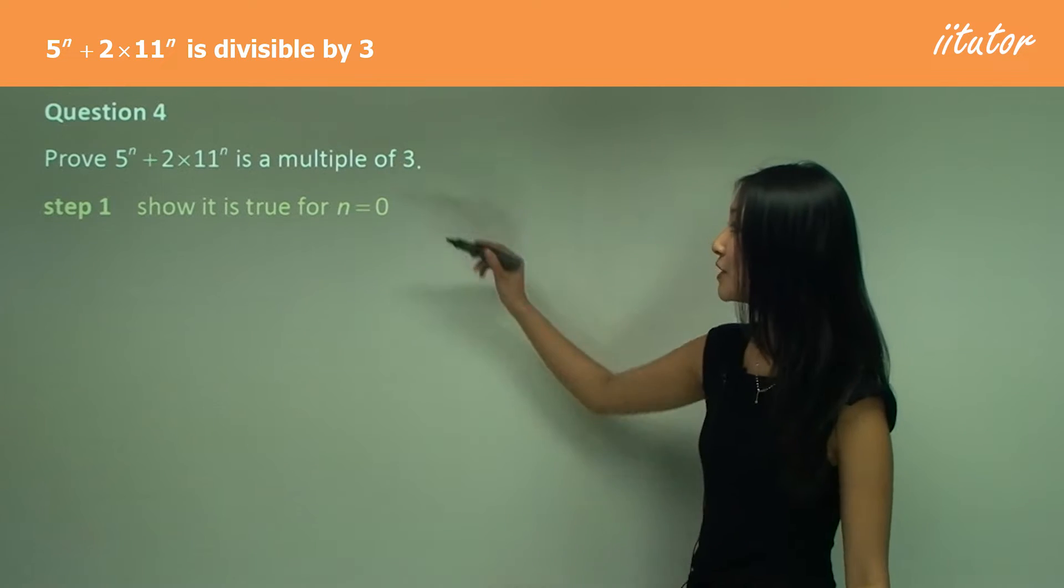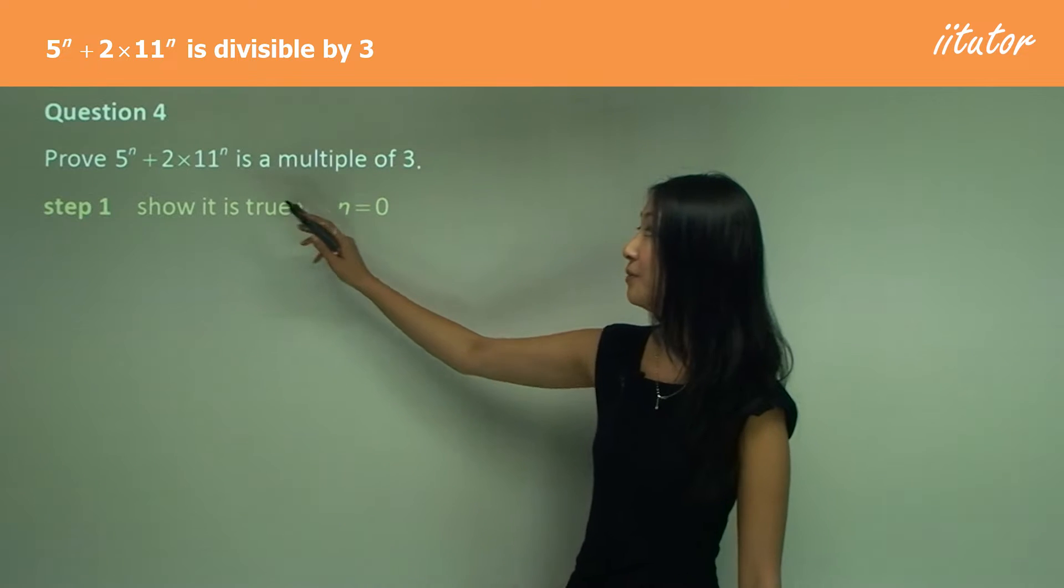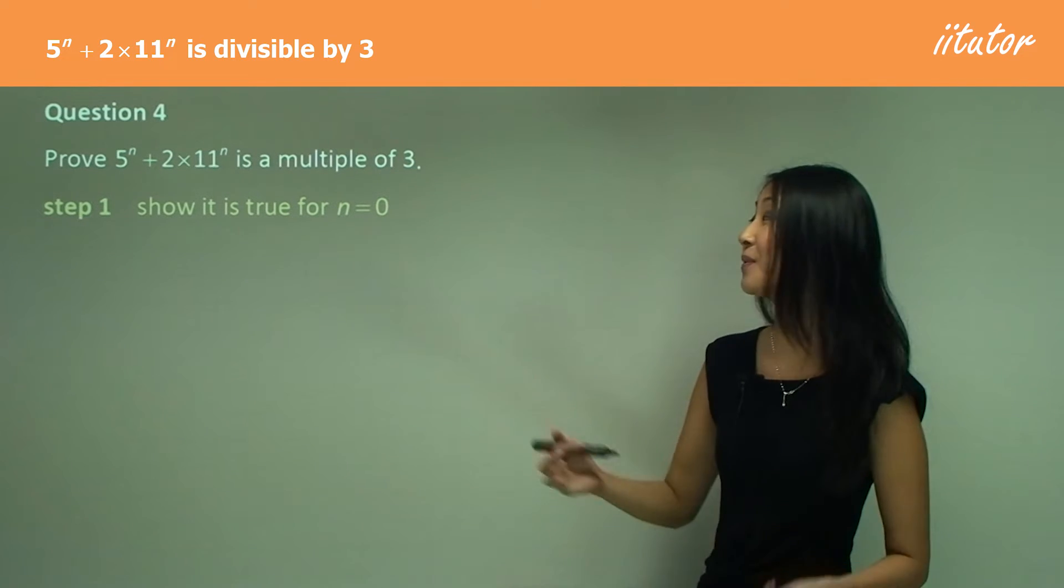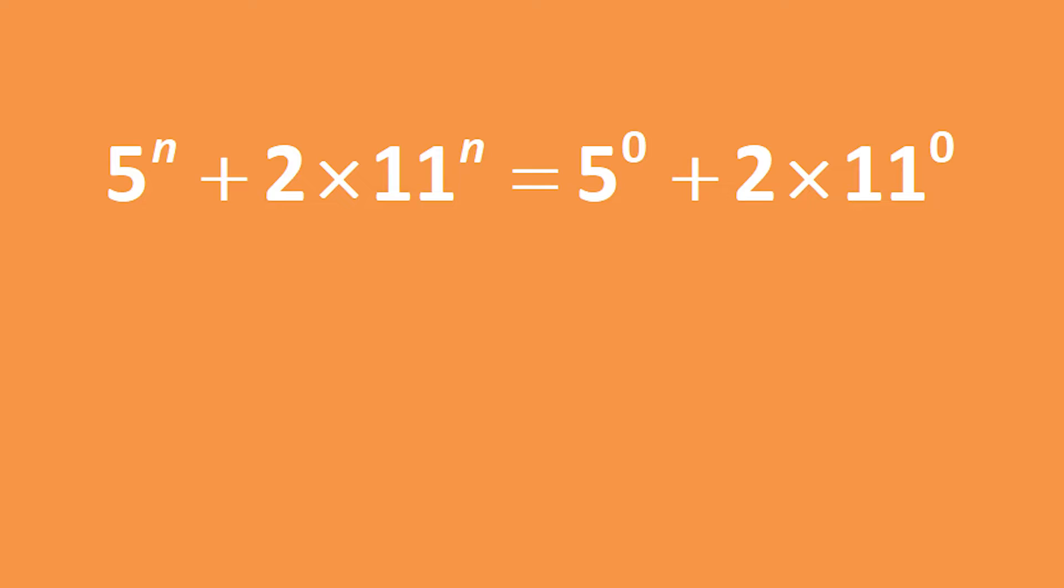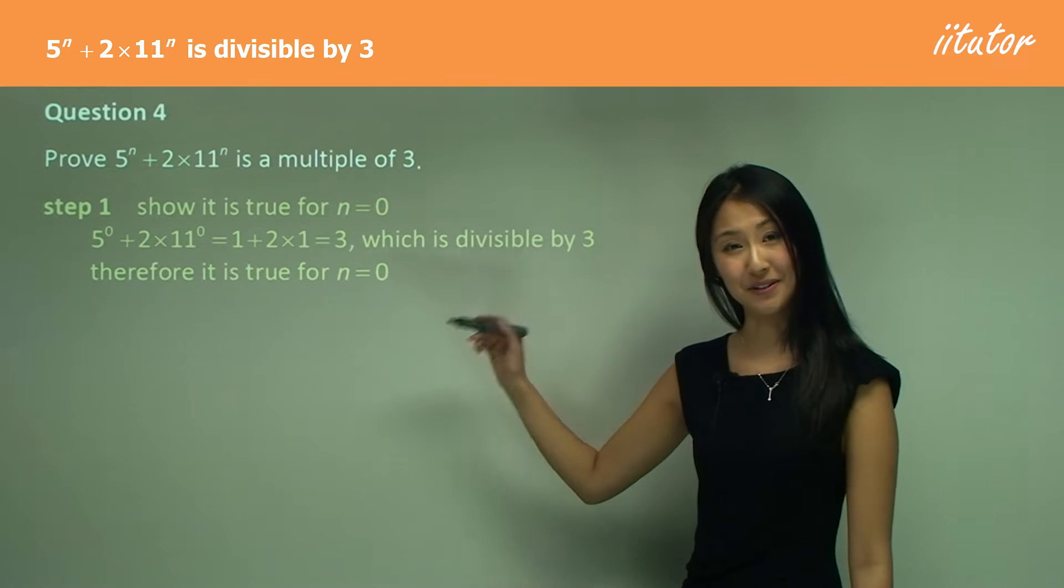So for step one, when we try n equals zero, we have one plus two, which is a multiple of three. So you know, we start off with n equals zero. So substituting it in, one plus two equals three, which is divisible by three. Therefore, it is true for n equals zero.